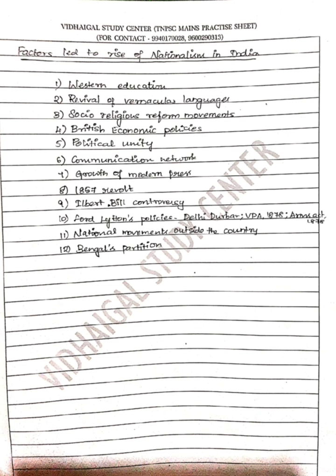Then the Ilbert Bill Controversy. In the Ilbert Bill, the issue was whether Indian judges could try Europeans. This bill was highly criticized by the English people, and the Ilbert Bill Controversy exposed the racist mindset of the British people.